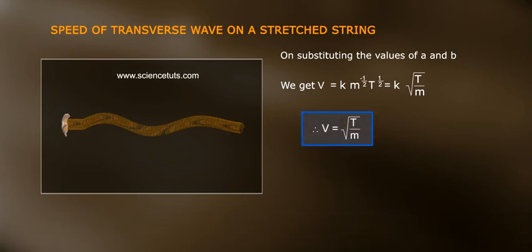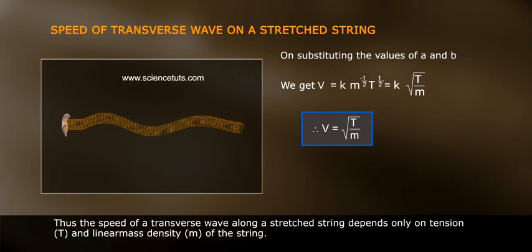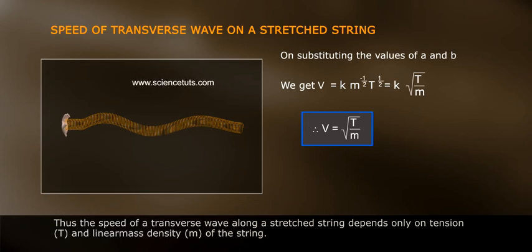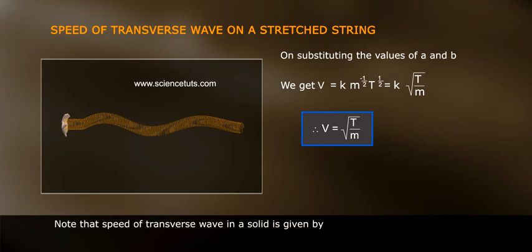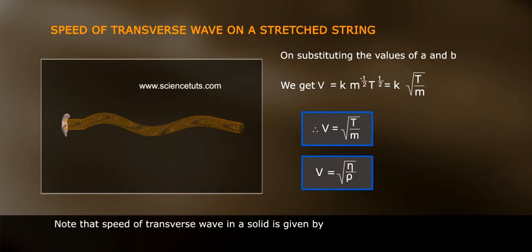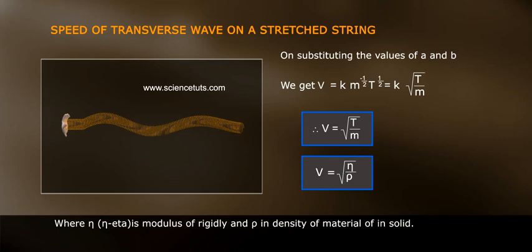Therefore, v = √(T/μ). Thus the speed of a transverse wave along a stretched string depends only on tension T and linear mass density μ of the string. Note that the speed of a transverse wave in a solid is given by v = √(η/ρ), where η is the modulus of rigidity and ρ is the density of the material of the solid.